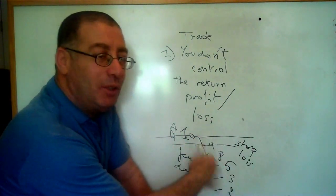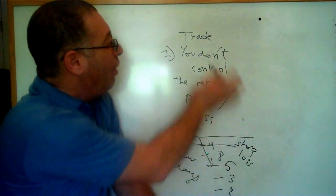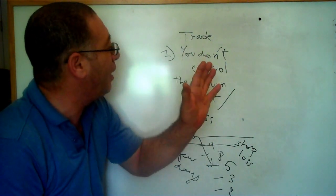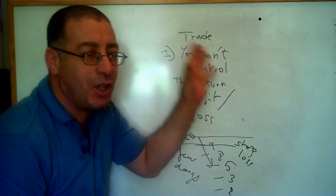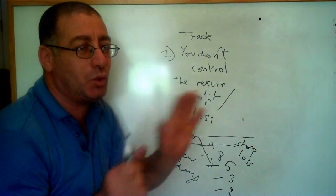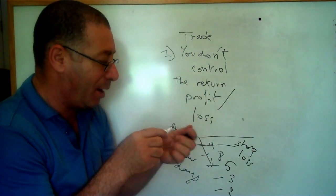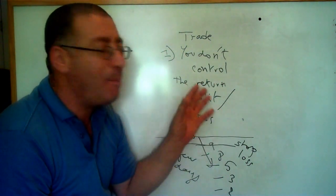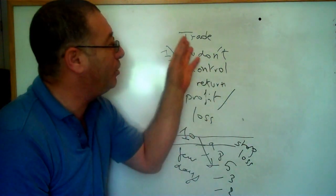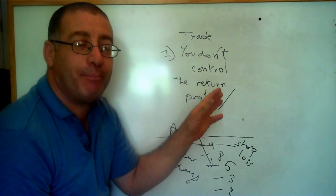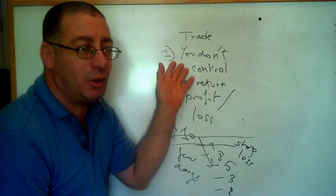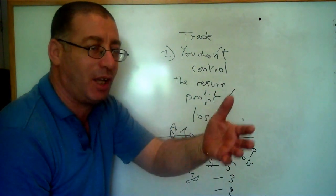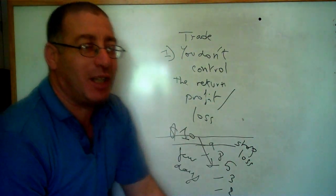So to summarize: I spoke about five or six things that you control, and there is only one thing you don't control - the return, whether profit or loss. If you have any questions, or if I forgot something about things you control or don't control, please write back. Thank you very much and have a nice day.